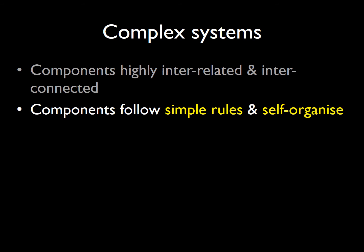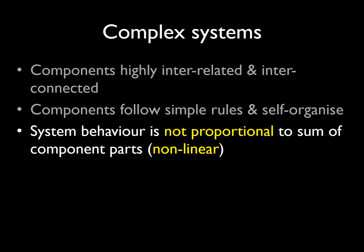Components within complex physiological systems follow simple rules. If we take ion channels, for example, they either allow ions to pass into or out of a cell. And these components self-organize — they don't need to be told what to do by the brain. Of particular importance, the overall behavior of a physiological system is not proportional to the sum of the behavior or actions of the individual component parts. They're not linear systems and the output is something more than the sum of its parts.